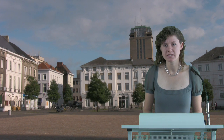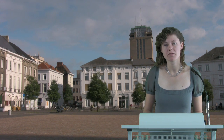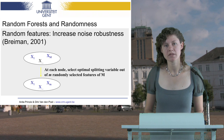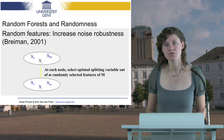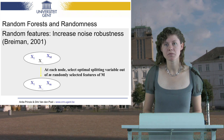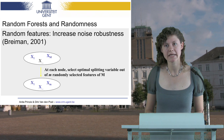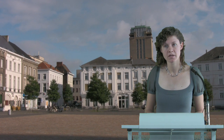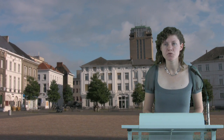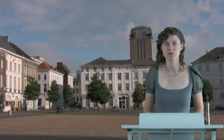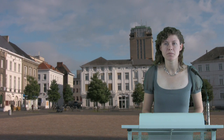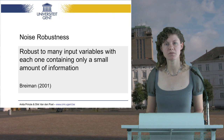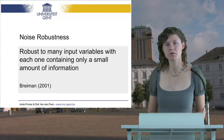Breiman uses this random observation selection in tandem with random feature selection. This means that at each node of the decision tree, the optimal splitting variable is selected out of a subspace of the original feature space. More specifically, the optimal splitting variable is selected out of lowercase m variables out of the total feature space containing capital M features. The goal of this random feature selection is to increase the noise robustness of the methodology. Breiman defines noise robustness as robustness to many input variables, with each one containing only a small amount of information.